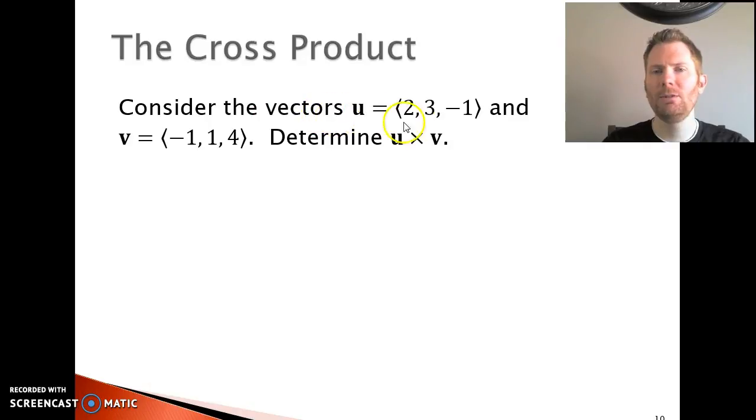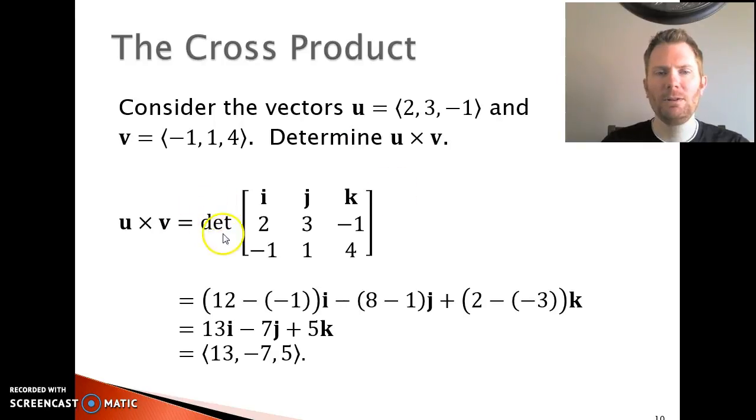Let's actually do this. If we consider the vectors U = (2, 3, -1) and V = (-1, 1, 4), we can find the cross product of U cross V. Here's how we'd set it up. U cross V is the determinant of this matrix where we have IJK as our standard basis vectors in the first row. Since we're doing U cross V, we want the components of U in the middle row: 2, 3, and negative 1. And then V needs to be in the bottom row: negative 1, 1, and 4, which you see here.